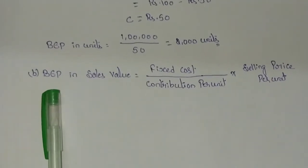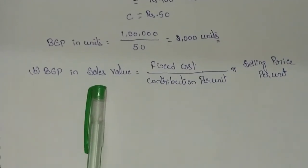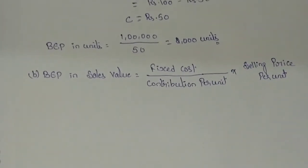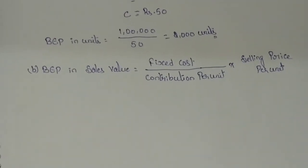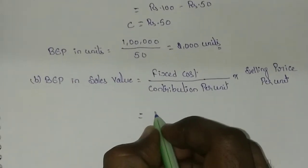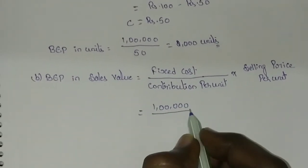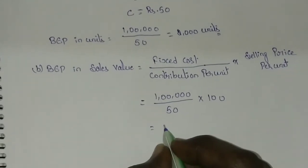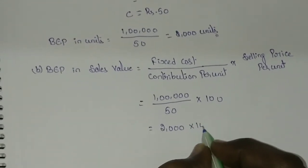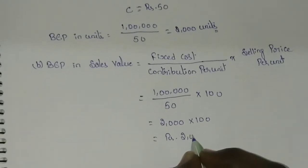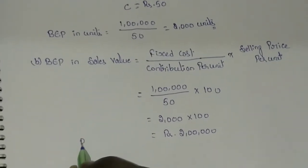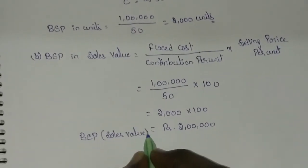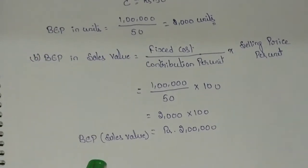The formula for calculating breakeven point in sales value is fixed cost divided by contribution per unit, multiplied by selling price per unit. Fixed cost is 1 lakh rupees, contribution per unit is 50 rupees, selling price per unit is 100 rupees. So 1 lakh divided by 50 gives 2,000, multiplied by 100 gives rupees 2 lakhs. The breakeven point in sales value is rupees 2 lakhs.